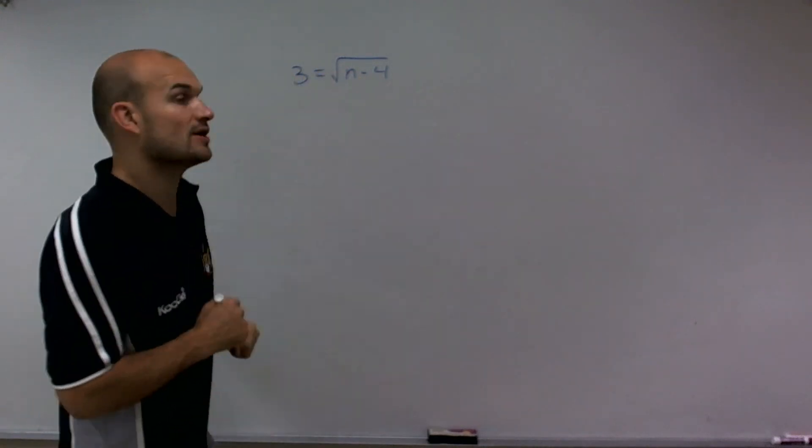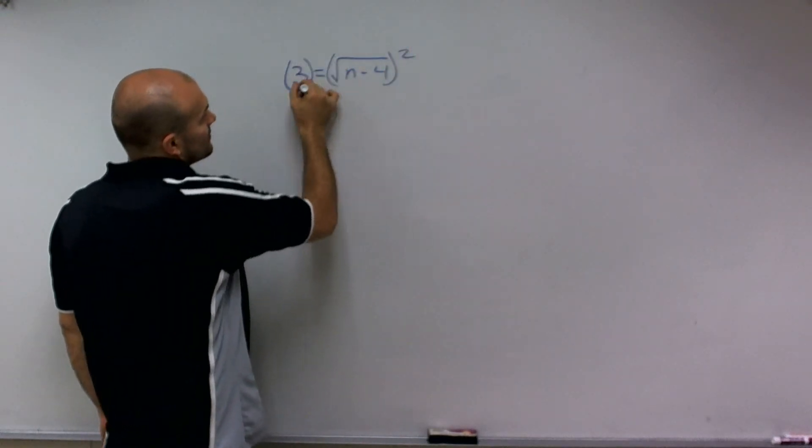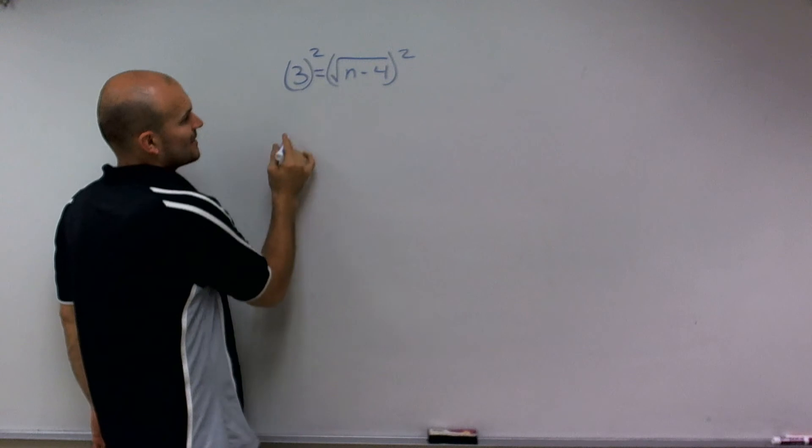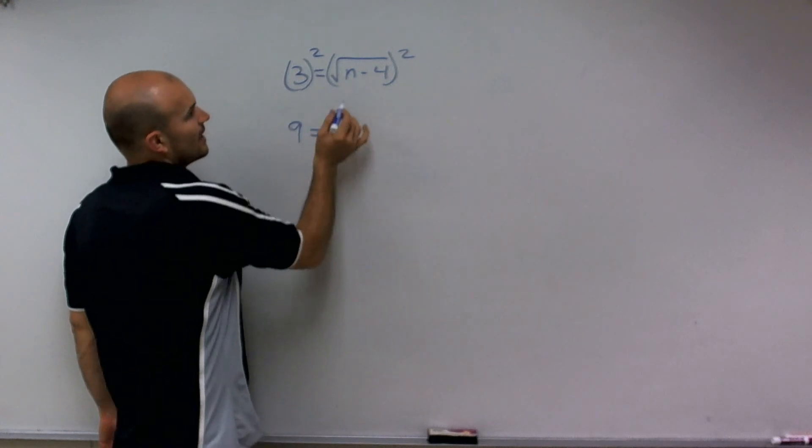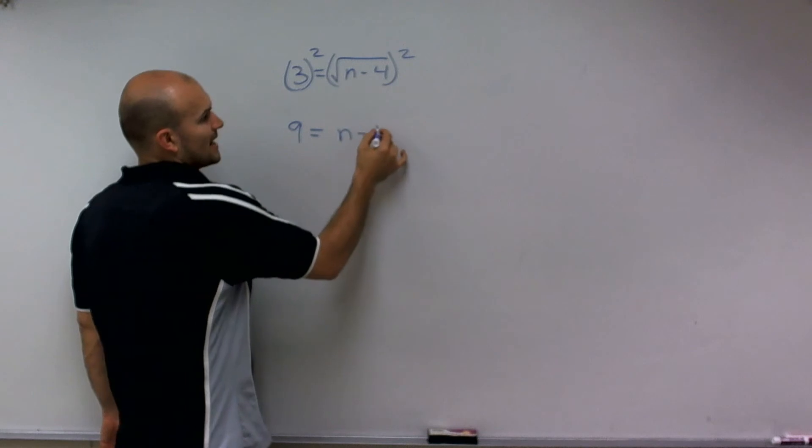So to undo the square root, what I'm going to have to do is square both sides. So when I square my left side, I obtain 9. And squaring the square root is now going to produce n minus 4.